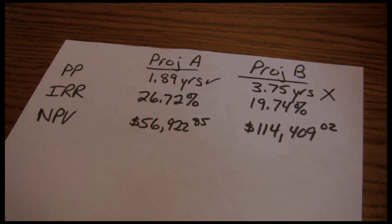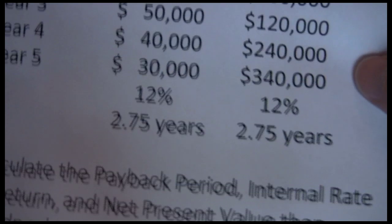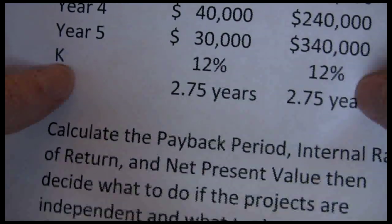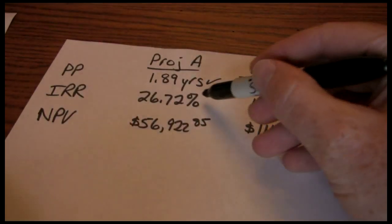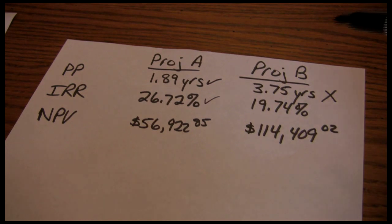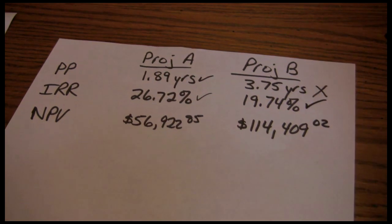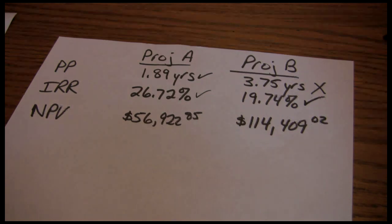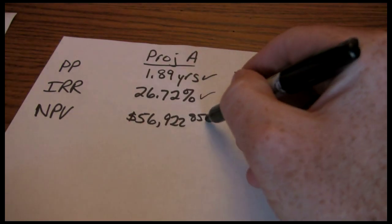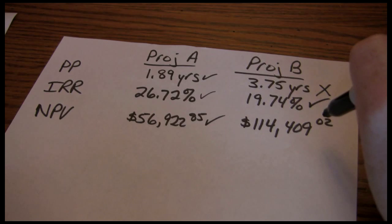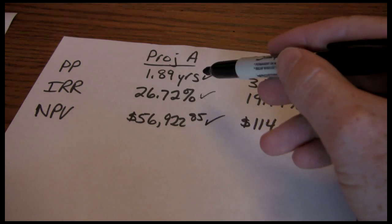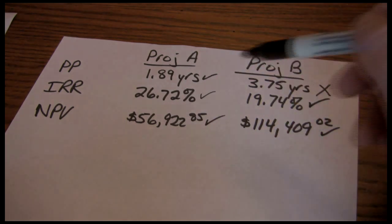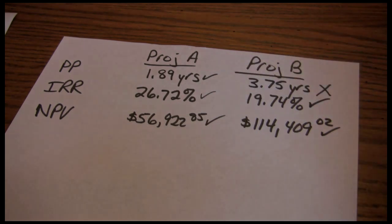Our next decision rule is internal rate of return. With internal rate of return, if the IRR is greater than the required return — 12% in this case — we should accept the project. Project A is acceptable. Project B is also acceptable. The last decision rule is net present value. The rule is if the net present value is greater than zero, we should accept the project. Project A is acceptable. Project B is acceptable. So according to payback period, we should take Project A and reject B. According to internal rate of return, we should take both. According to net present value, we should take both.